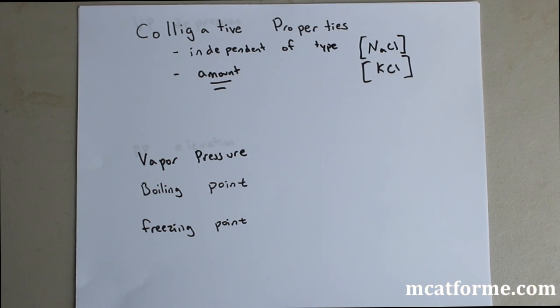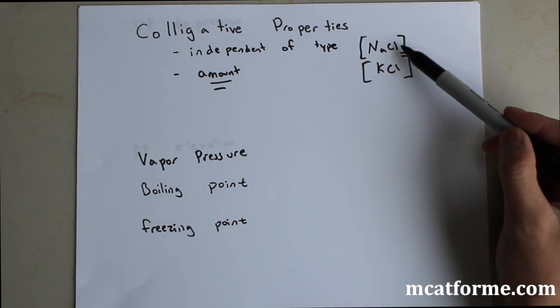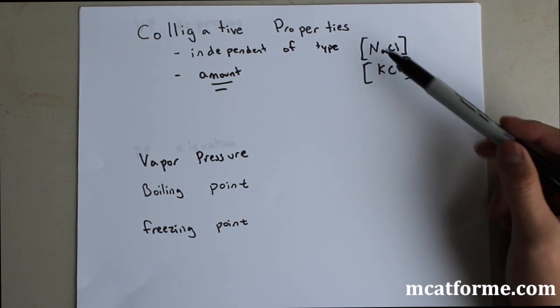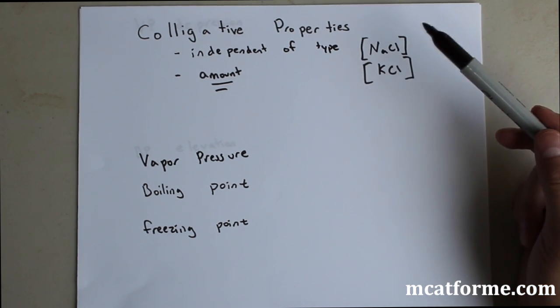Now we're going to be talking about colligative properties, specifically colligative properties of solutions. Colligative properties are properties that are independent of type. It doesn't matter if you have NaCl or KCl; if you have the same concentration of them, they're going to affect these certain properties in the same amount.